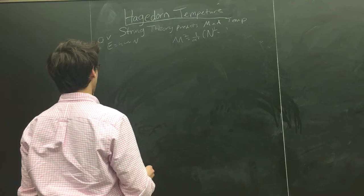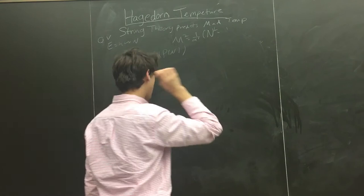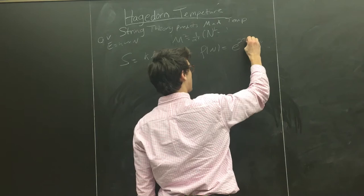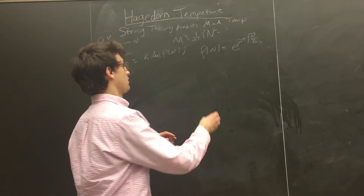We have the entropy equals k ln, and then the number of states. And last time, we found out that p(n) equals e to the 2 pi square root of n over 24 minus 1. You could obviously see that in the last video if you'd like.